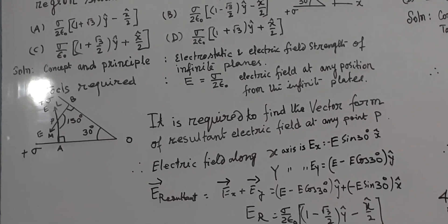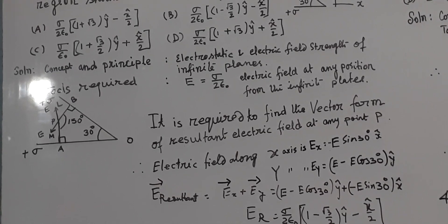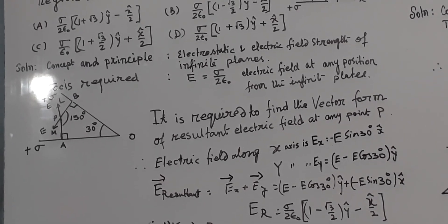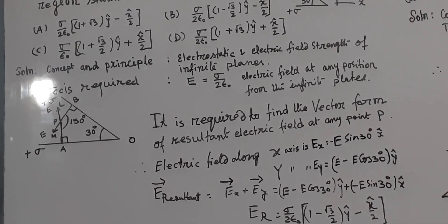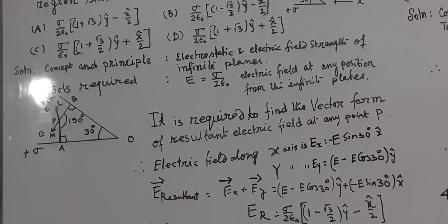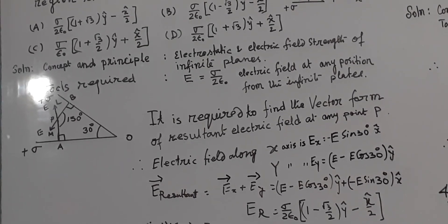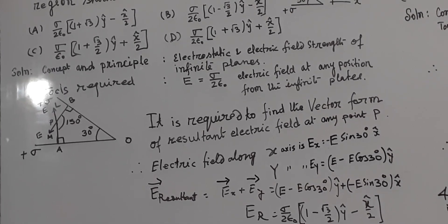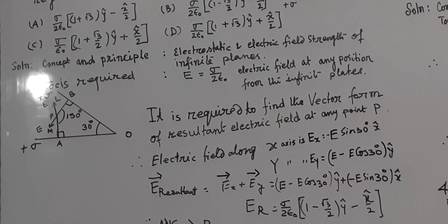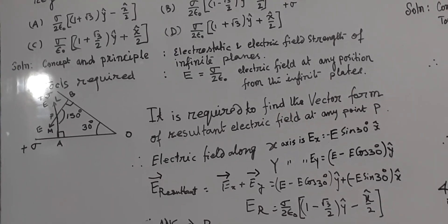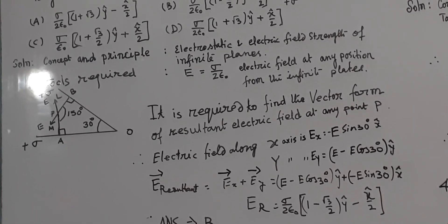As we have to find out resulting electric field at point P, vector form of electric field. So, along x axis, it is Ex, along y axis, it is Ey. Ex is here, minus E sin 30 degree, unit vector x, and Ey is E minus E cos 30 degree, unit vector y.